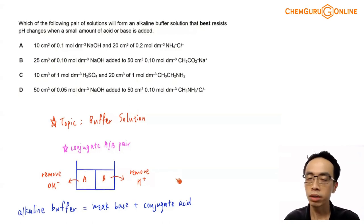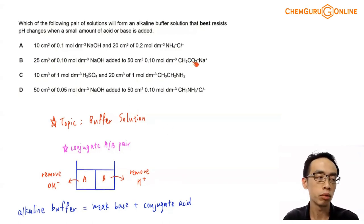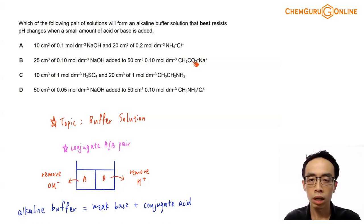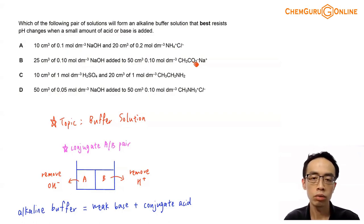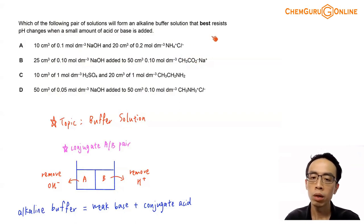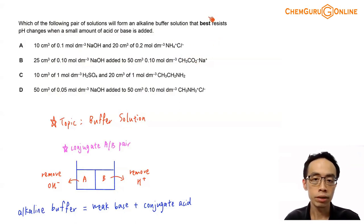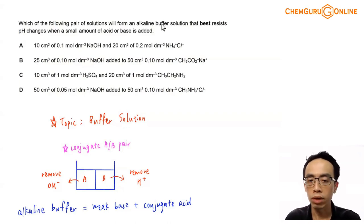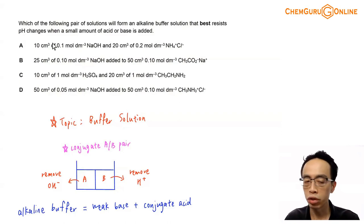Next, I have to determine for each of these solutions when I mix them together, am I getting an alkaline buffer or not? And if I have more than one alkaline buffer, I want to determine which one of them will resist pH changes to a better extent, because the question is asking us to determine an alkaline buffer solution that best resists pH changes.